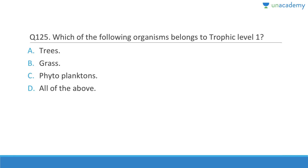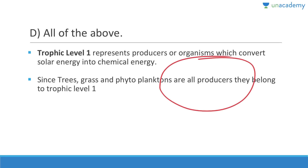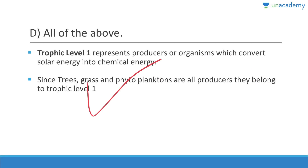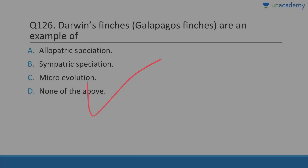Organisms belonging to trophic level one are producers — trees, grass, and phytoplankton are all producers. These organisms convert solar energy into chemical energy through photosynthesis.